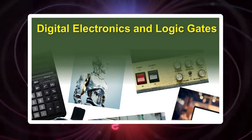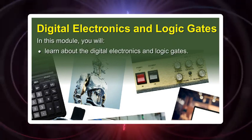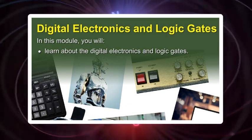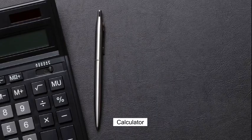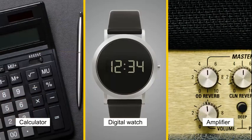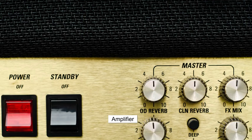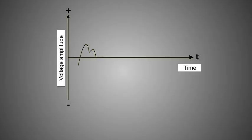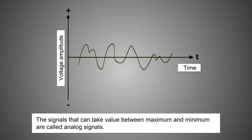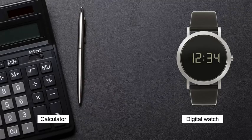In this module you will learn about digital electronics and logic gates. Devices like calculators, digital watches, and amplifiers have all become an inseparable part of our lives. It is interesting to know that the input signals in these devices are different. In amplifier circuits, the input signals — that is, the current or voltage signals — continuously change with time and can take values between maximum and minimum. Such signals are called analog signals.